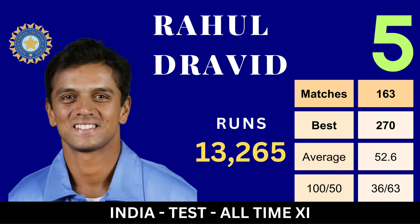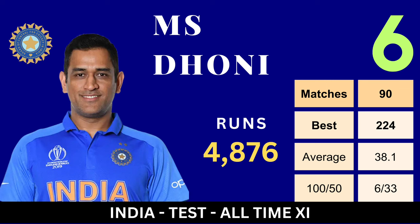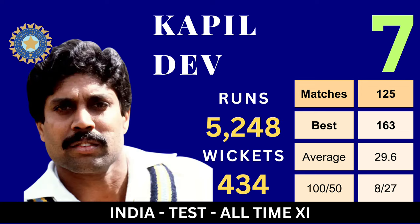At the number five position, we have the wall, Rahul Dravid. Spanning from 1996 to 2012, Dravid was the epitome of classical batting, accumulating 13,265 runs at an average of 50.63. In the ever-crucial role of middle-order batsman and wicketkeeper, we have captain cool, MS Dhoni. From 2005 to 2014, Dhoni's leadership and calculated aggression took Indian cricket to new heights, while his batting prowess added 4,876 runs at an average of 38.09. Leading the side and contributing with both bat and ball, the iconic Kapil Dev, India's World Cup winning captain — his 5,248 runs and 434 wickets are a testament to his all-round brilliance.